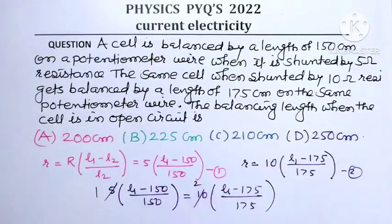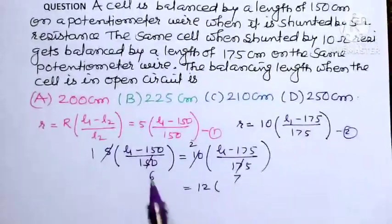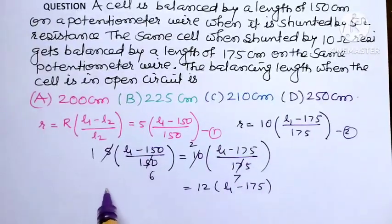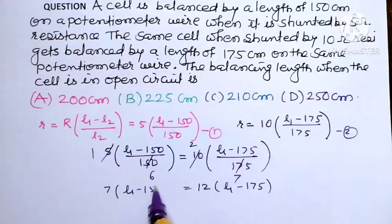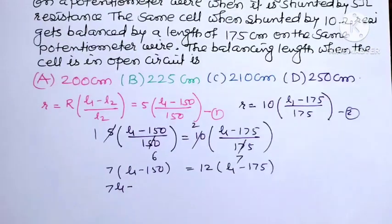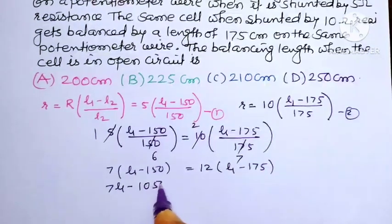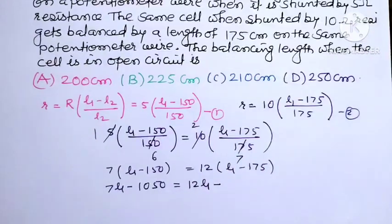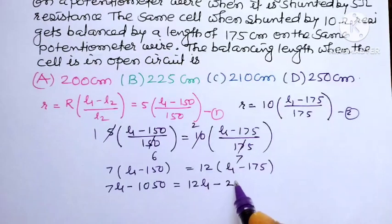So 5 in bracket L1 minus 150 divided by 150 equals 12 in bracket L1 minus 175 divided by 175. This 7 will be taken to this side, so 7 times L1 minus 150. Cross multiply, so it is 7L1 minus 150 times 7, which is 1050, equals 12L1 minus 12 times 175. What is 12 times 175? It is 2100.